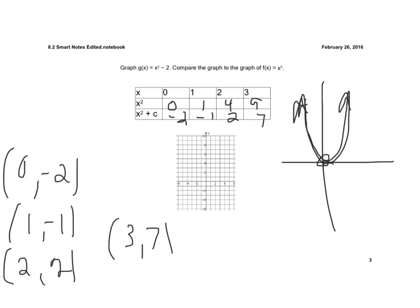So if we graph these ordered pairs, I have 0 negative 2, 1 negative 1, 2 comma 2, and 3, 7. And then, just as we did last night, the points are symmetric. So here's my line of symmetry. So I have a point over here, a point that matches up right over here, and then the other point that matches up here. So now I have my graph.